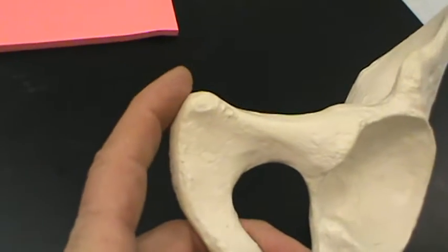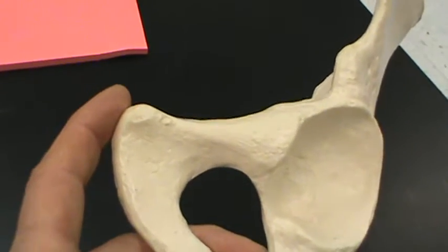So first of all, let's talk about this little pointy part. What bone is that? Well, that's going to be the pubis.